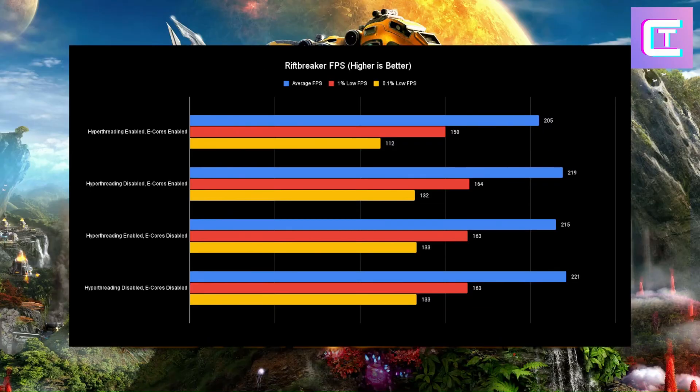Next up, Rift Breaker — the winner on average FPS was hyperthreading disabled and E-cores disabled. In the lows, everything was pretty equal except for hyperthreading enabled with E-cores enabled, which suggests this game may have a core limit or just doesn't know what to do with all those cores. As soon as you disabled hyperthreading, every other config was within margin of error. So you can leave hyperthreading disabled and E-cores on and you'll be fine.